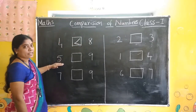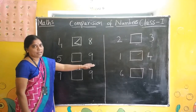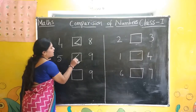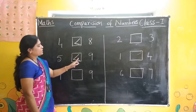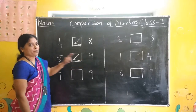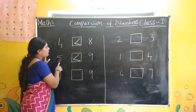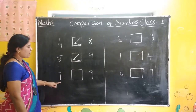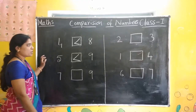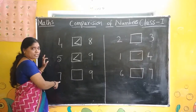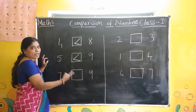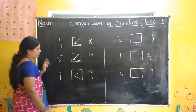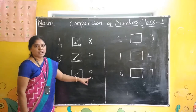Got it? Next one. Read the number first: 5, 9. So 9 is the biggest number. Alligator likes the biggest number, so it is opening its mouth towards the biggest number. How to read this: 5 is less than 9. Next one. Read the numbers: 7, 9. Which one is bigger? 9 is bigger. So we have to put this symbol. 7 is less than 9.